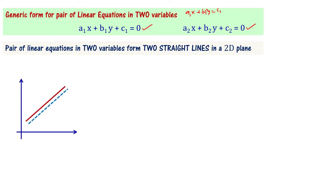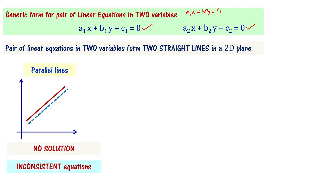When the lines are parallel, there exists no solution for this set of equations. These are called an inconsistent set of linear equations.